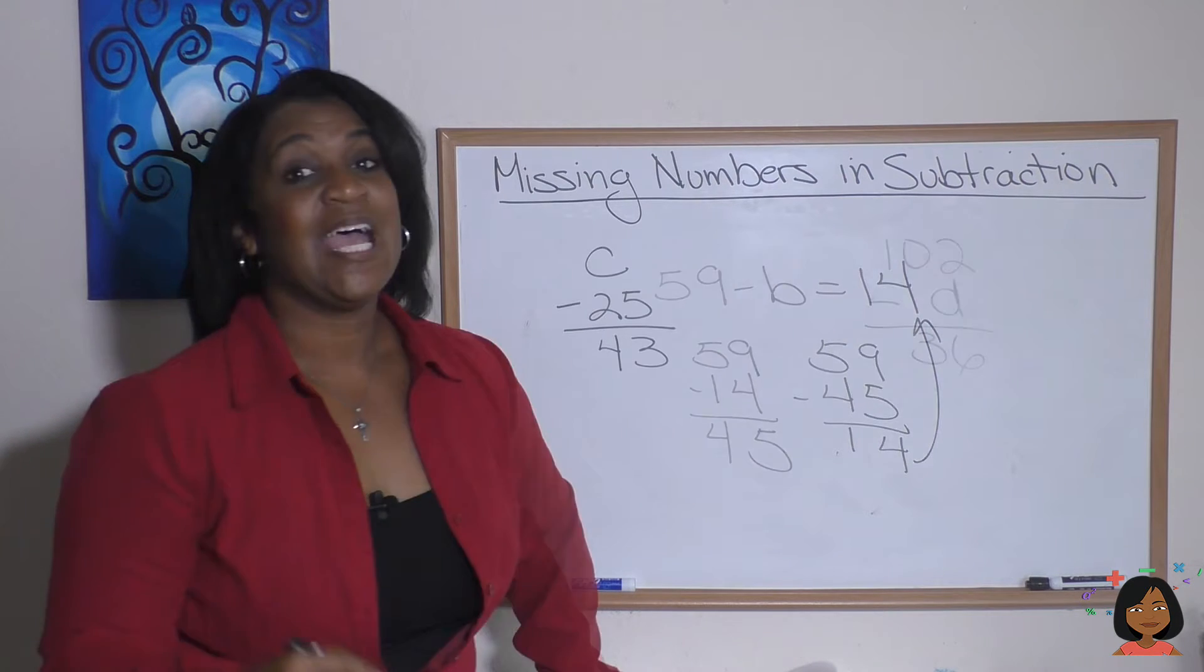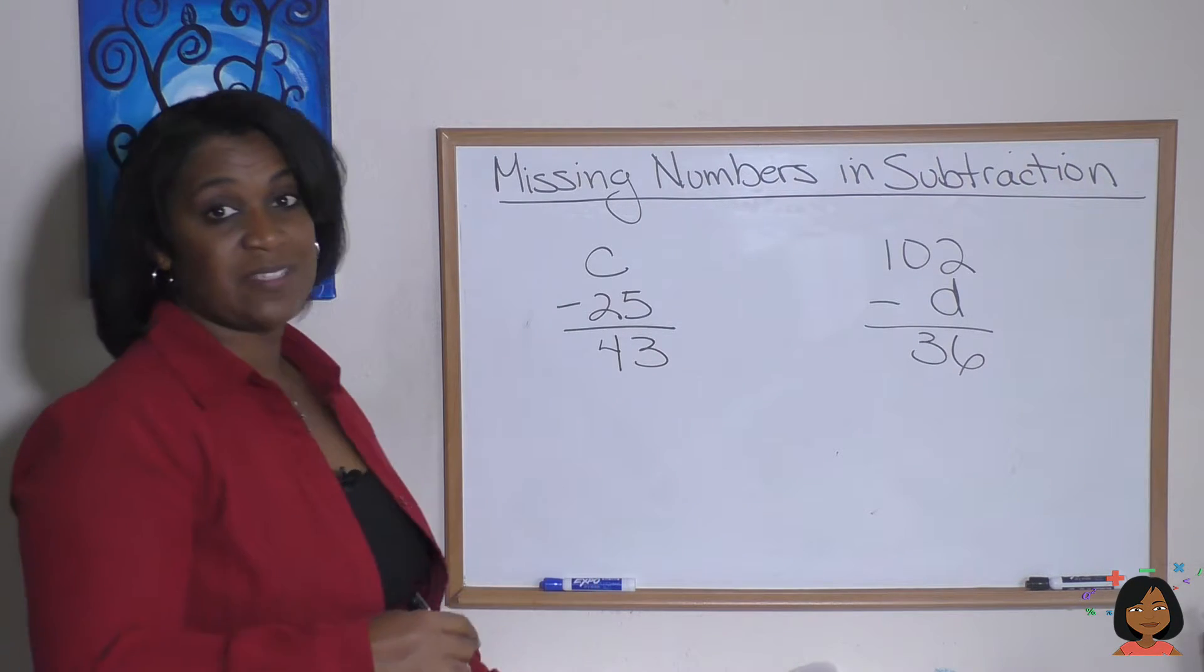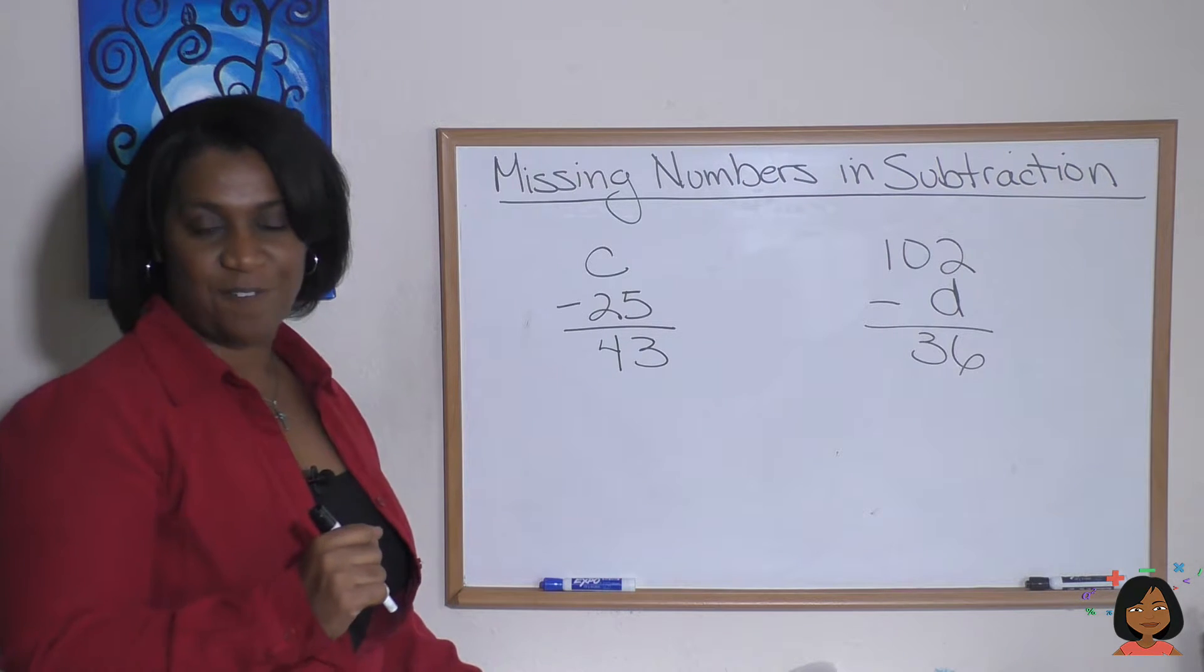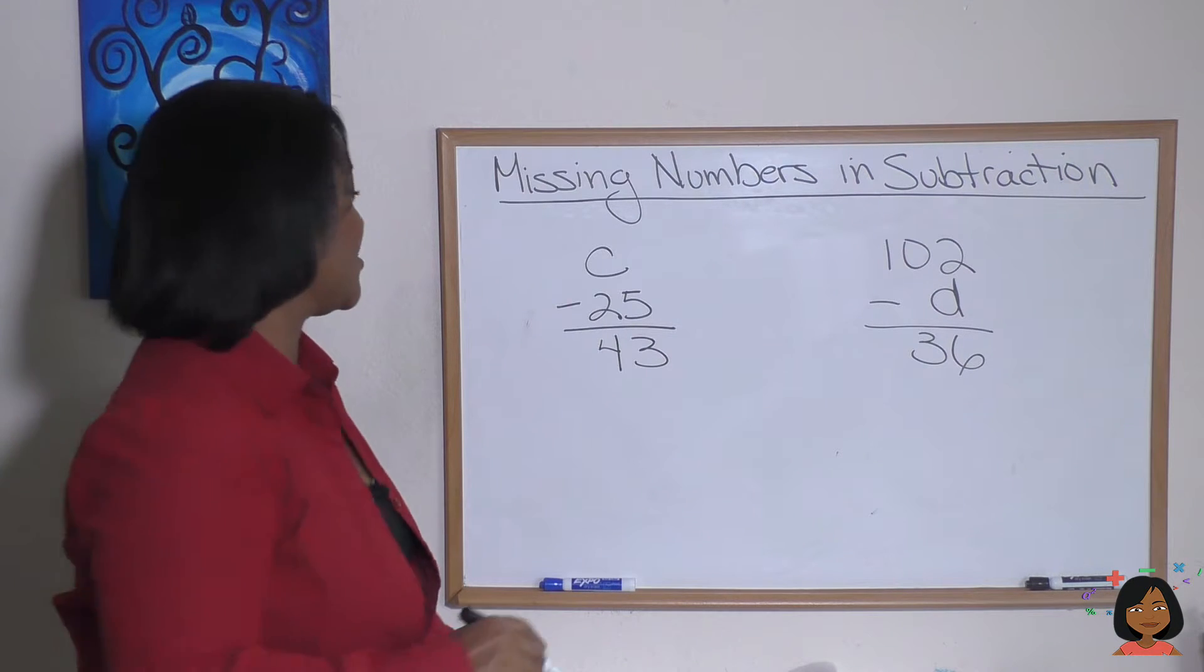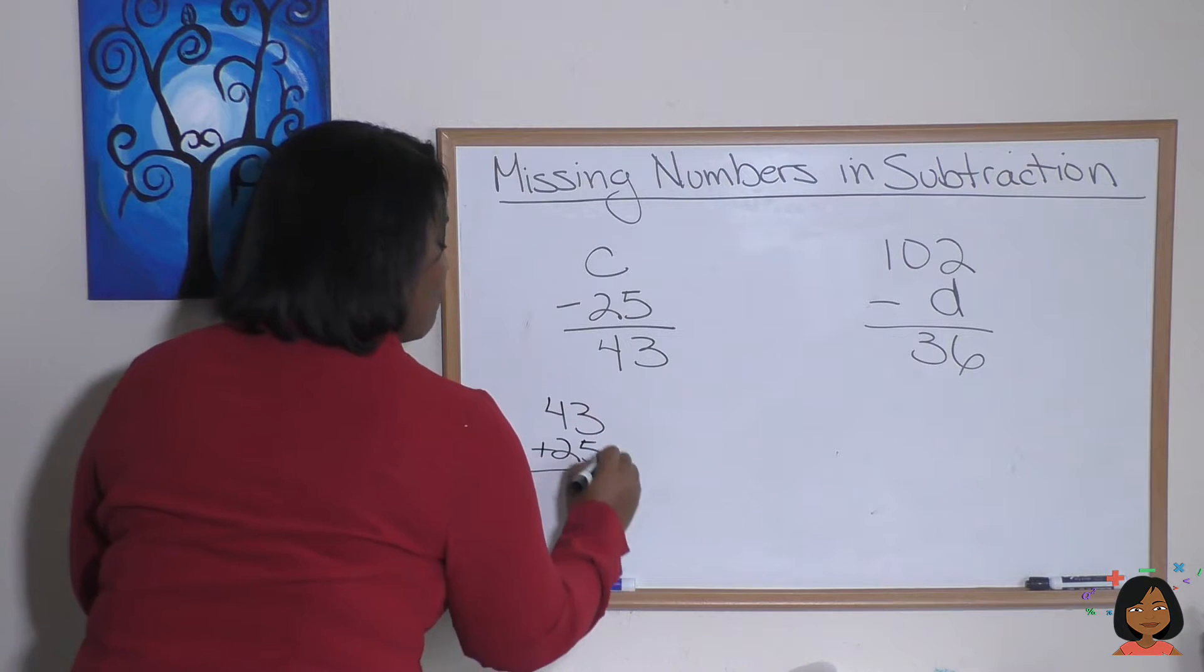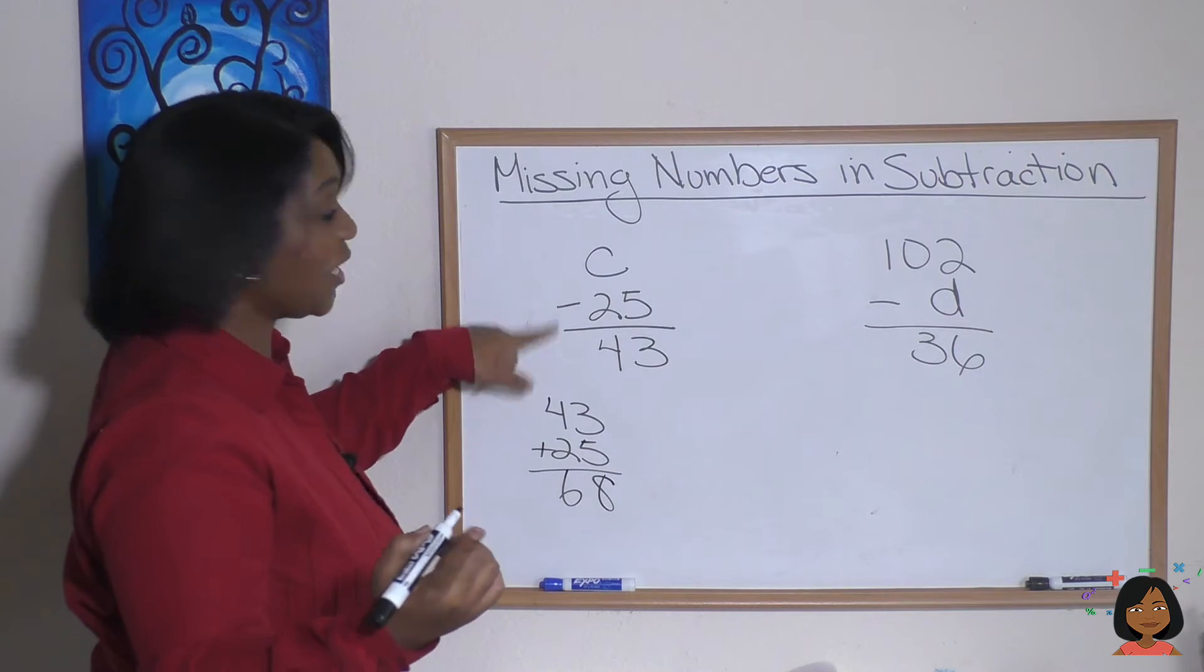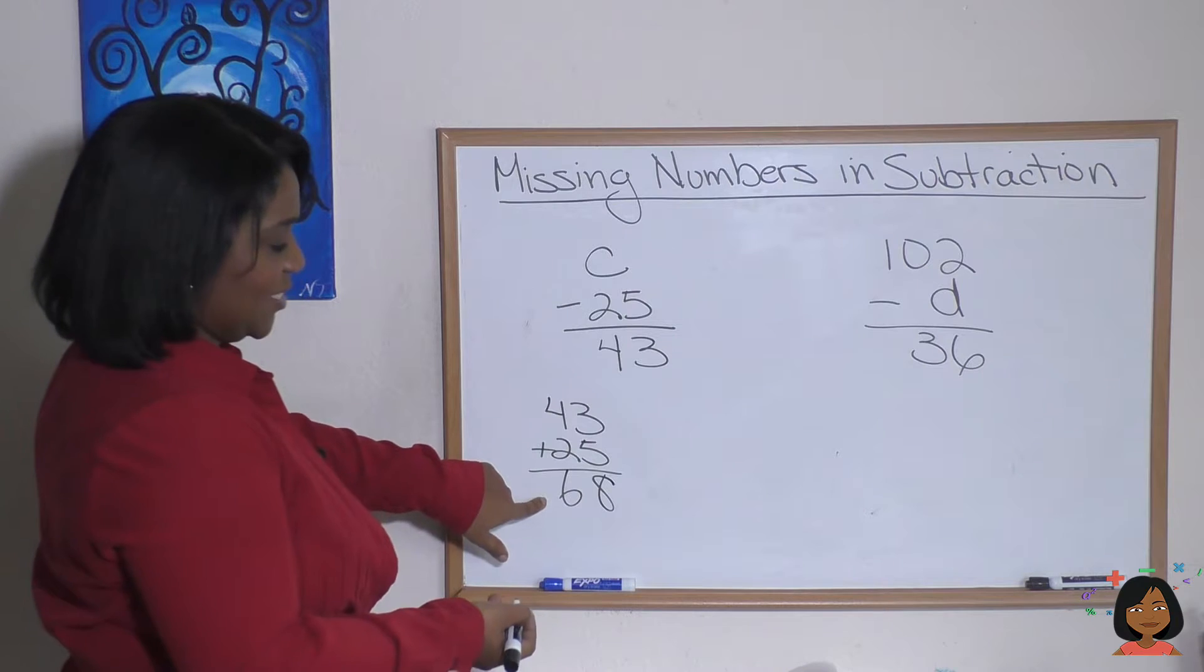Take a look at these two examples. Here we have a missing minuend. Good job! That means we do what to find the answer? We do the opposite—we add to find the answer. Here we go: 43 plus 25. And you might remember this from subtraction having that built-in answer checker. We add up—that's really all we're doing here. So we have 68.